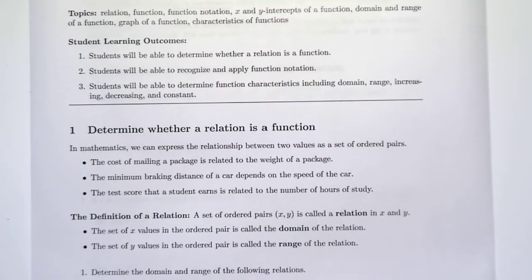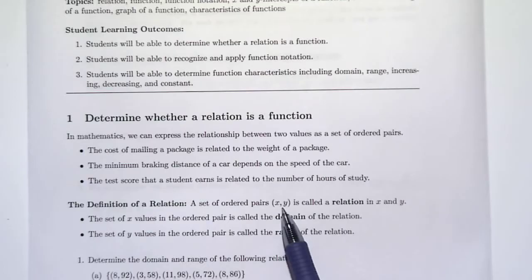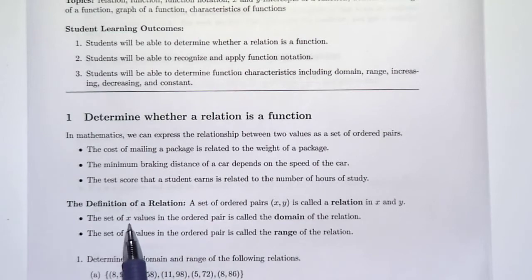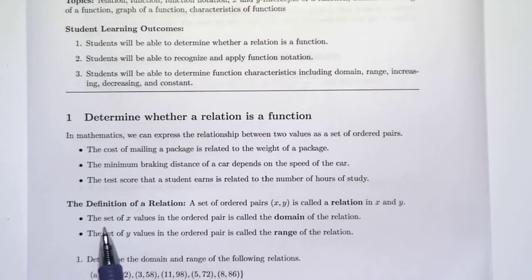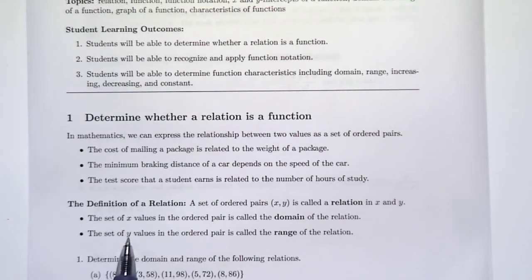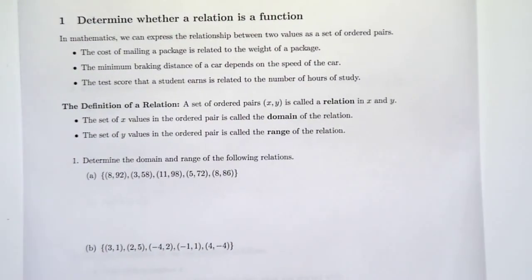In math, here's how we're going to define a relation: a set of ordered pairs (x, y) is called a relation in x and y. Here's a really important part: all of the x values are called the domain, so the set of x values is called the domain of the relation, and the set of y values is called the range of the relation. Let's look at a couple relations here and determine the domain and range of them.